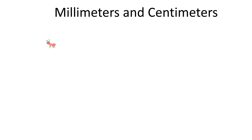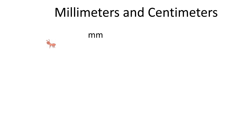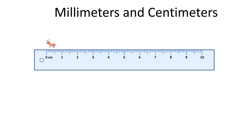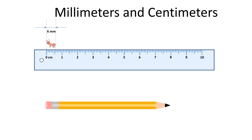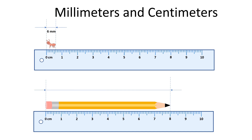Now, when we are familiar with different types of units, we can measure the length of our ant and see when it is appropriate to use different types of units. Which unit of measurement should we use? The ant is tiny, and the smallest unit we talked about is millimeter. We use millimeters to measure small objects. In our example, the ant is 6 millimeters long. But what if we would like to measure a pencil? We can use millimeters, but the number of millimeters is going to be big. Therefore, it is better to use centimeters. In our example, the pencil is 8 centimeters long.